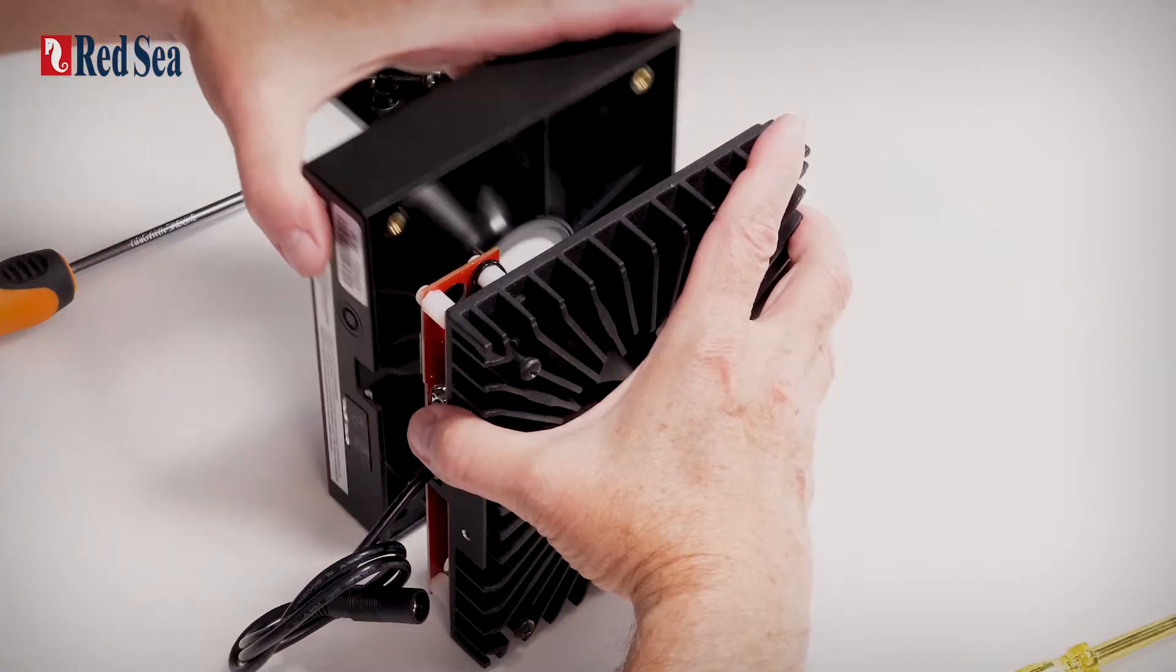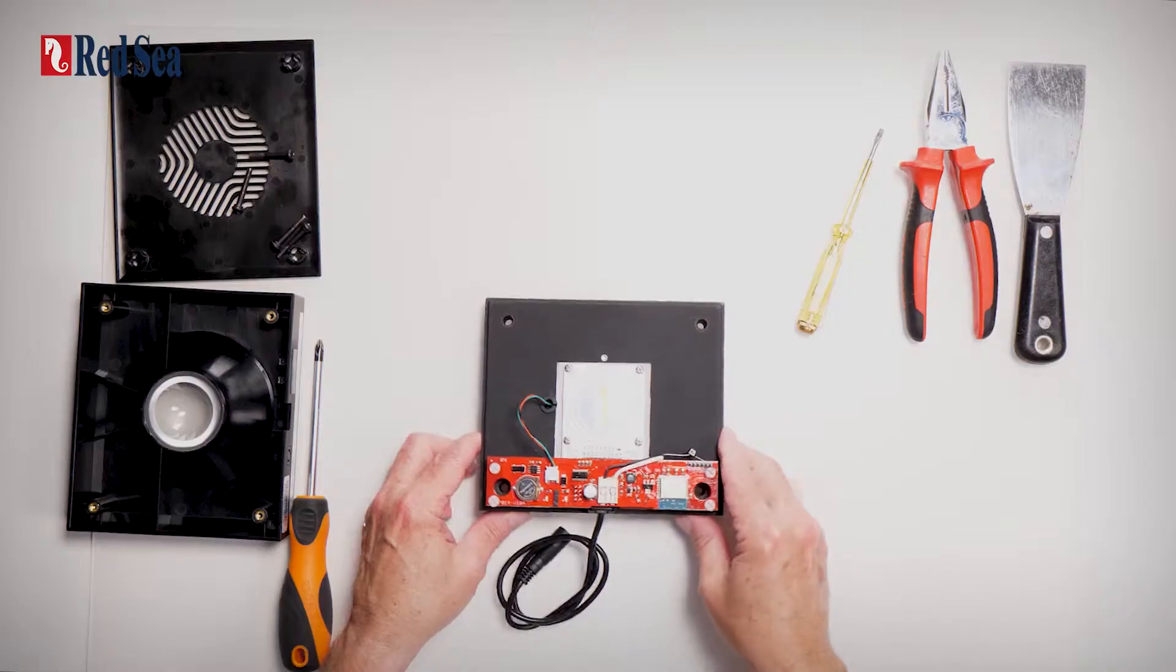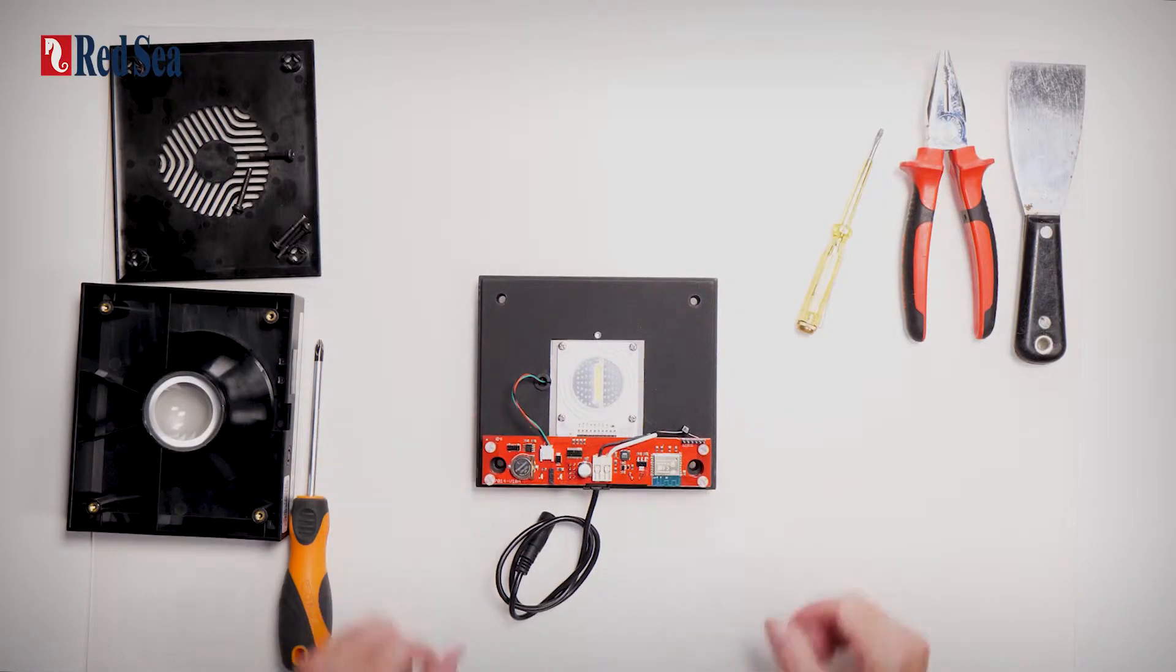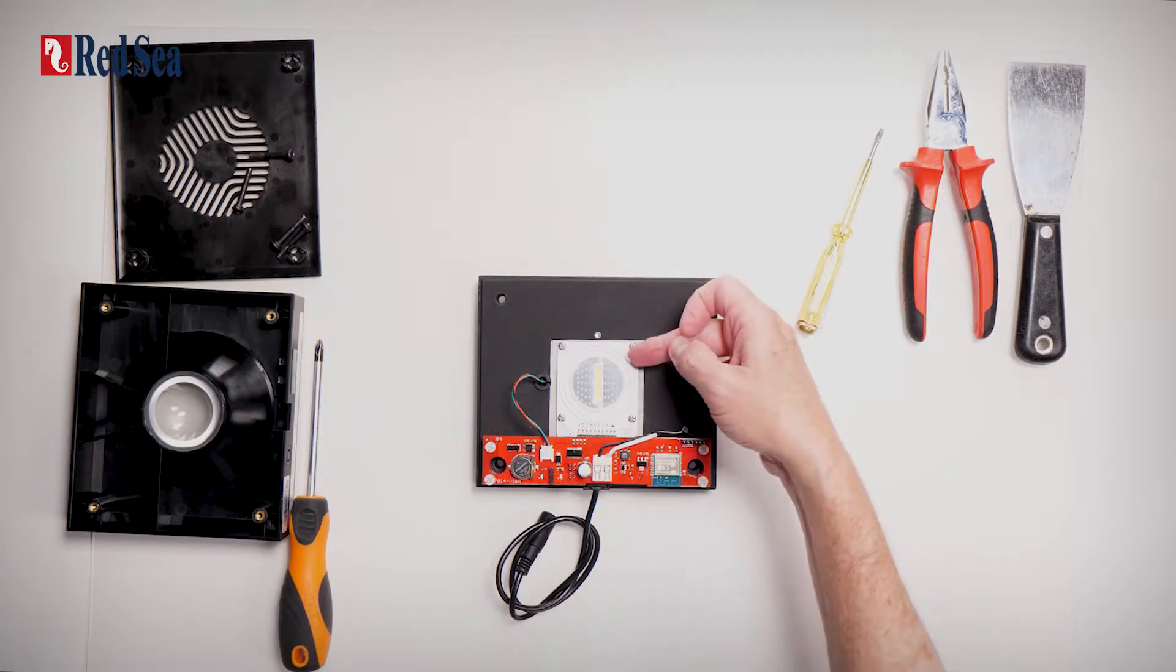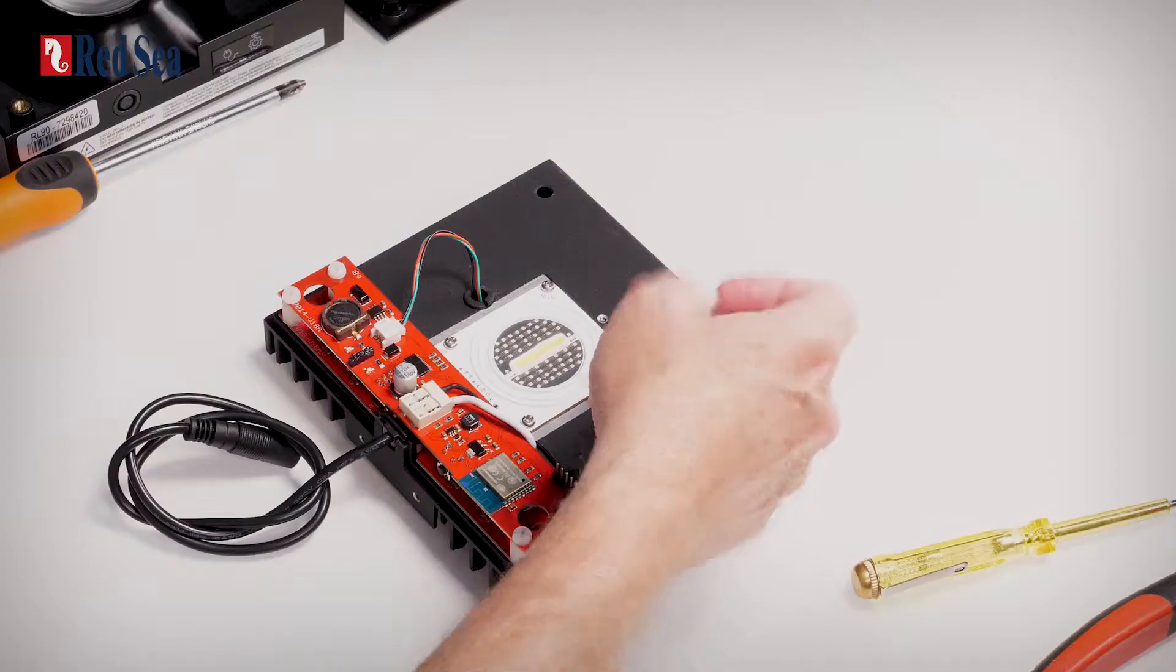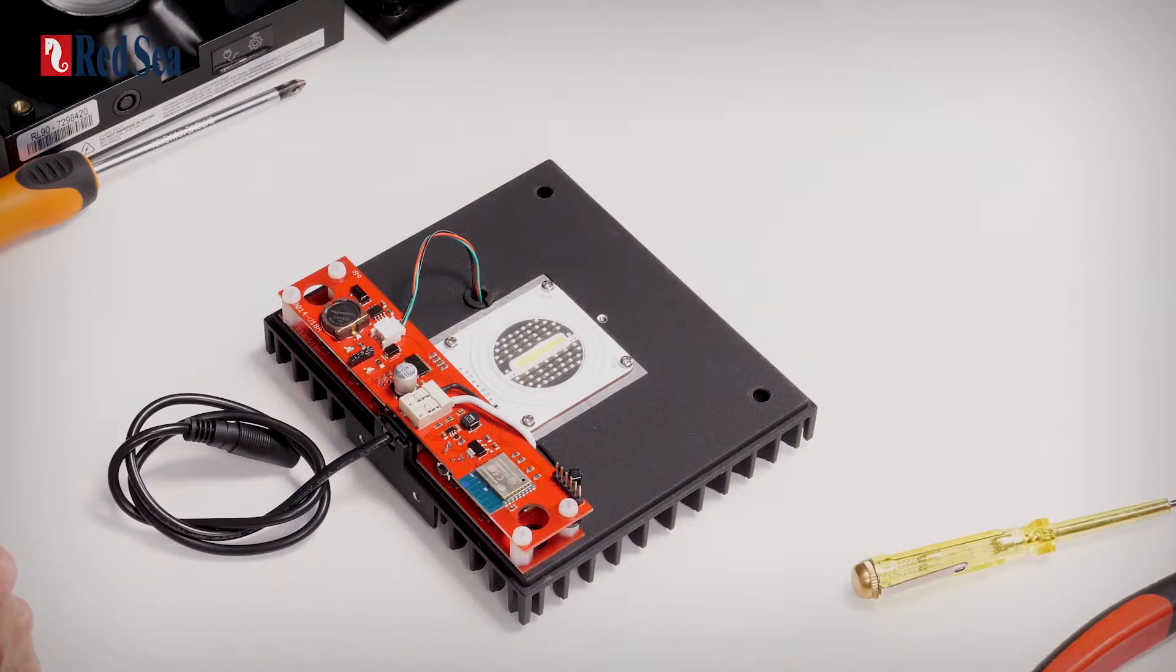And then just put this on one side. Here we have the electronic boards and here we have the LED array. First thing we are going to do is to replace the electronic boards.